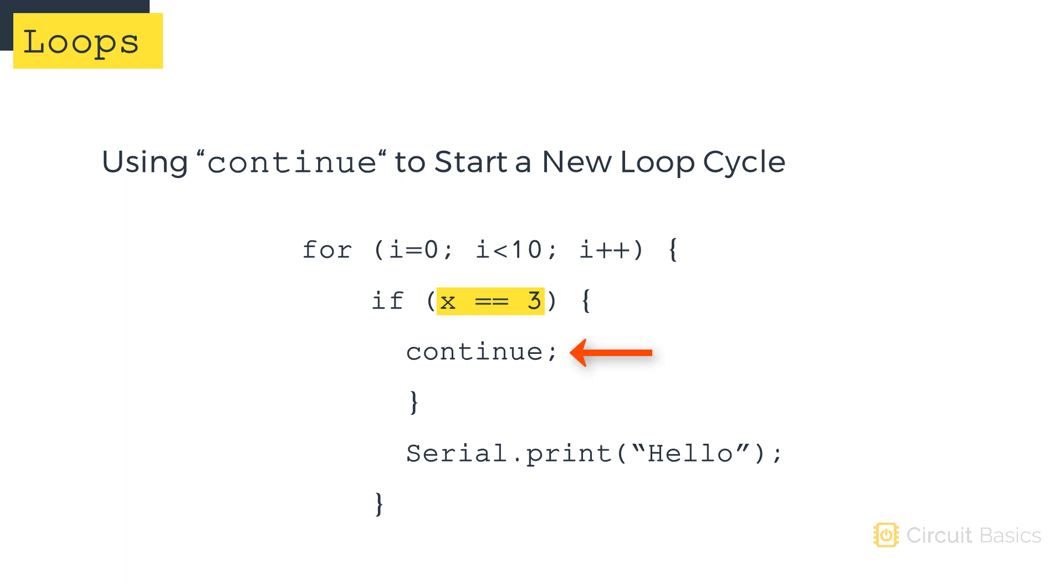But when x does equal 3, the for loop will stop right here, then start a new cycle to the loop. With the continue command, the sketch doesn't exit the for loop. It just jumps to the start of the next iteration.